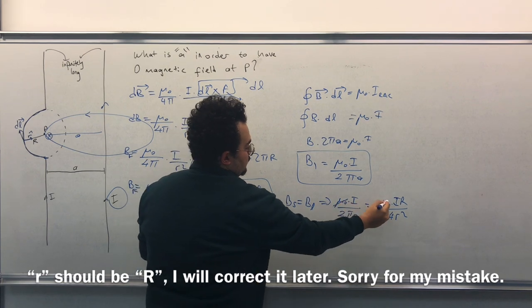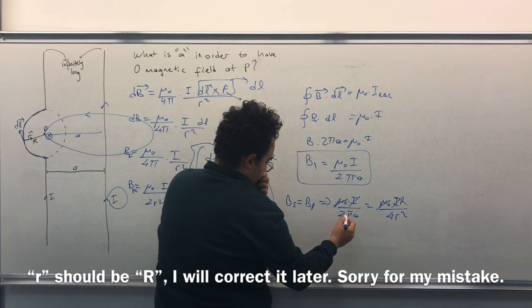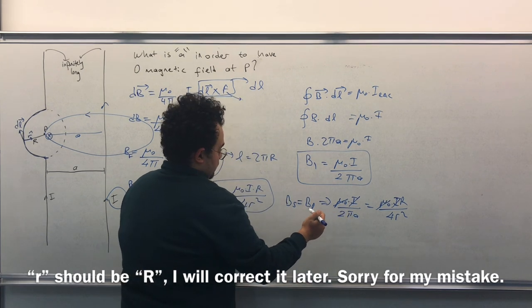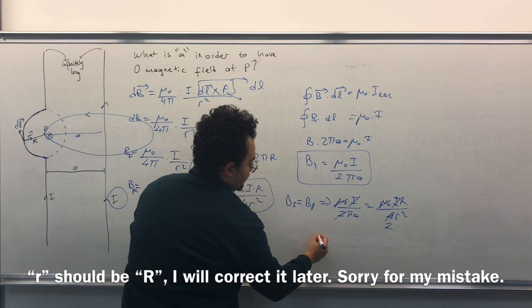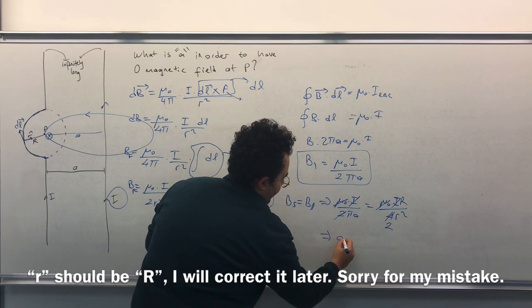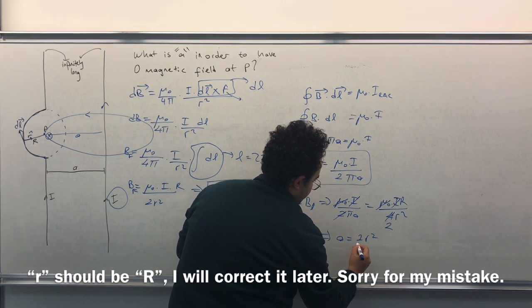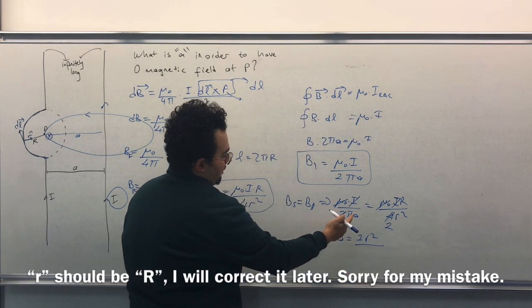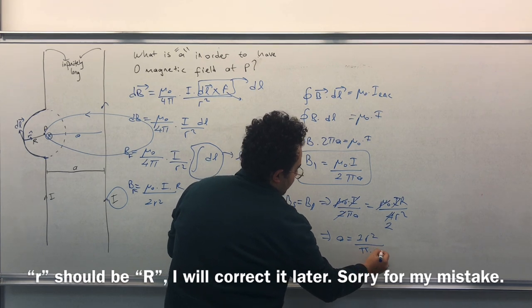Mu zero goes, I goes, and 2 goes. So A equals to 2r squared divided by pi times capital R.